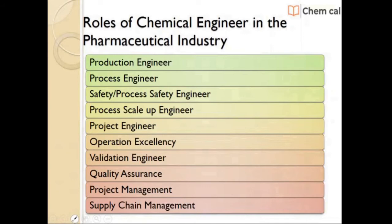Today I would like to discuss the importance of a chemical engineer in the pharmaceutical industry. There are various roles in the pharmaceutical plant. A chemical engineer can work in various departments like production, process, safety, process safety, and process scale-up. You can also hear terms like technology transfer, technology absorption, and manufacturing science and technology. A chemical engineer can also work in project, operation excellency, validation engineering, quality assurance, project management, and supply chain management.